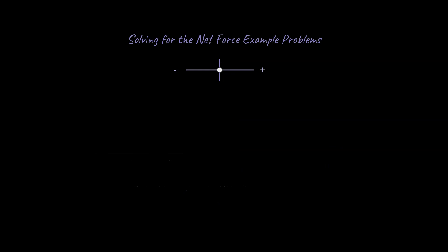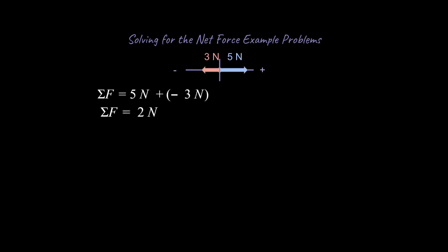Let's talk about something called net force. By 'net' we mean overall — what's the overall force on an object? If we have one force of five newtons to the right (the positive x-direction) and another force of negative three newtons to the left, the net force in the x-axis would be five newtons plus negative three newtons, because direction matters, giving an overall net force of two newtons.